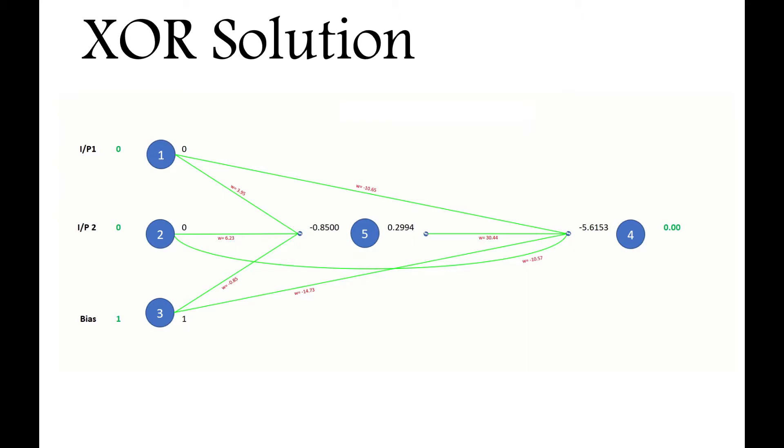For a zero zero input, this should be a zero output, which it is. Going back and applying a one zero and letting it flow from layer to layer gives me a one as expected. It's the same for a zero one at the inputs. And finally, a one one set of inputs gives me a zero output.